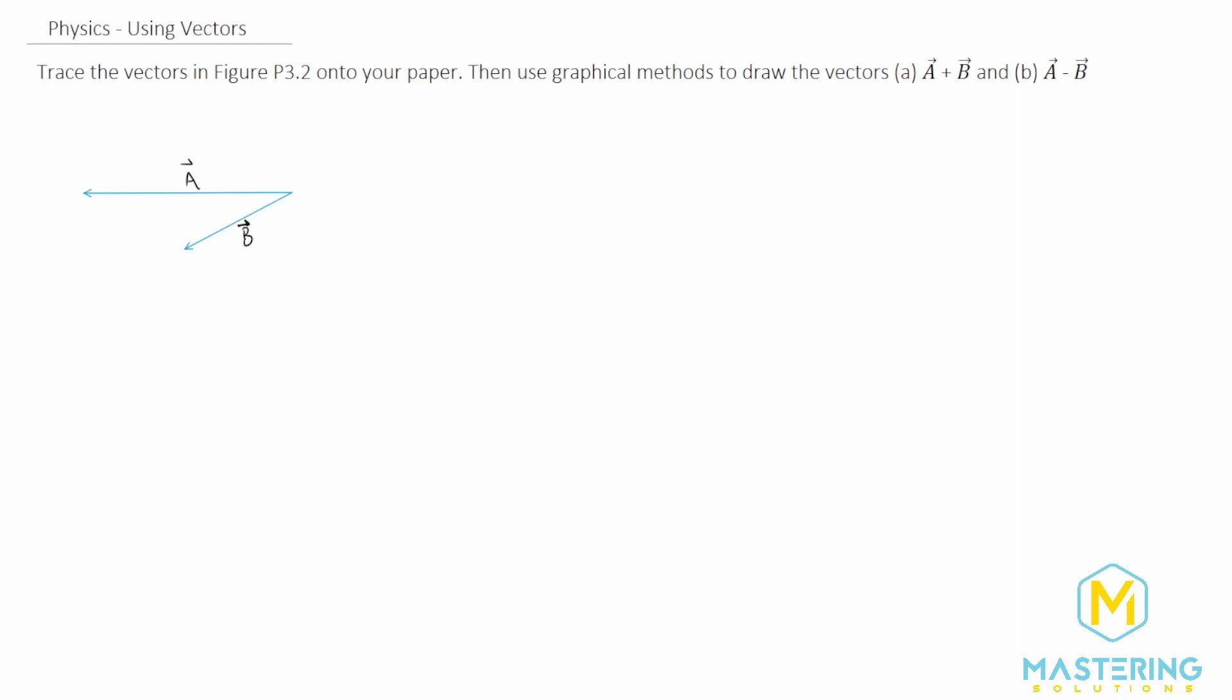For part A for the addition, we're going to go A plus B, so A goes first. So A is like that. You simply just draw the first one. Then you take B and we move it so that the tail is at the end of the tip of A and then we just draw it. So here's B.